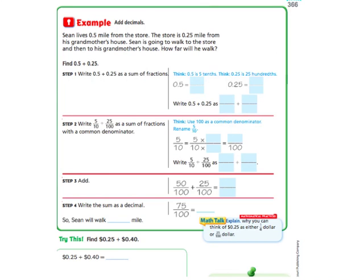Okay, so now that we've learned how to add fractions, we're going to practice adding decimals. So Sean lives five tenths of a mile from the store. The store is twenty five hundredths mile from his grandmother's house. Sean is going to walk to the store and then to his grandmother's house. How far will he walk? So they want us to add five tenths and twenty five one hundredths.